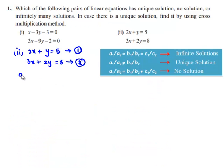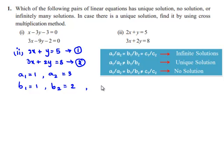So, a1 is equal to 1, a2 is equal to 3, b1 is 1, b2 is 2, and c1 is equal to minus 5, c2 is equal to minus 8.